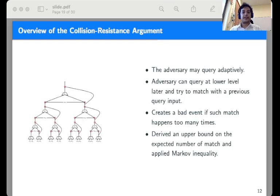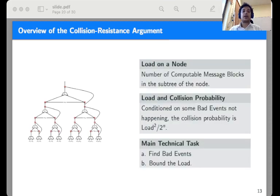I'm going to present an overview of the collision resistance proof. The main difficulty is in handling the fact that the adversary may query the functions adaptively. For example, the adversary may make some queries to the root and later make queries at the lower level and try to match with the previous query input. The core idea is to define a bad event if such match happens too many times. We derive an upper bound on the expected number of such match and apply Markov inequality.